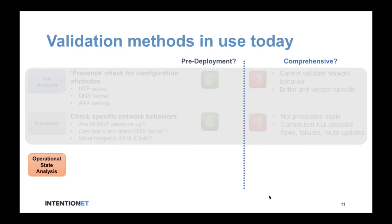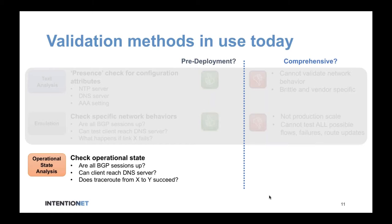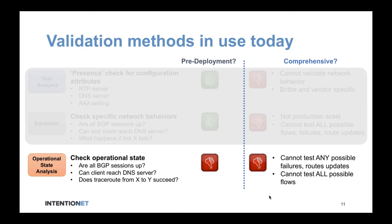The third method is operational state analysis — checking specific attributes of the operational network, like whether BGP sessions are currently up, whether a client can reach the DNS server, or doing a traceroute. Think of it as very akin to monitoring. But by definition, since you're probing the operational state of the network, this is not something you can do pre-deployment. It's always a post-deployment validation. And it's not comprehensive because you can't feasibly test all possible flows or failures in your production environment.